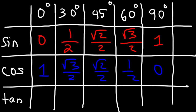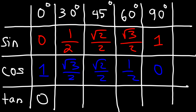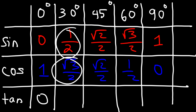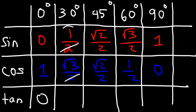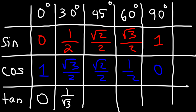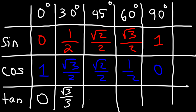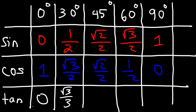Tangent is sine divided by cosine. So 0 divided by 1 is 0; tangent of 0 degrees is 0. If we take 1 half and divide it by the square root of 3 over 2, the 2s will cancel, and it becomes 1 divided by the square root of 3. Rationalizing by multiplying by root 3 over root 3 gives us the square root of 3 over 3. Tan 45 is sine over cosine; because those two values are the same, it's 1.